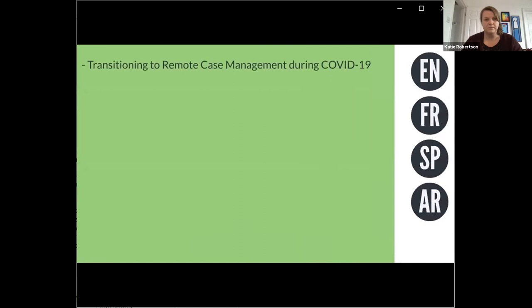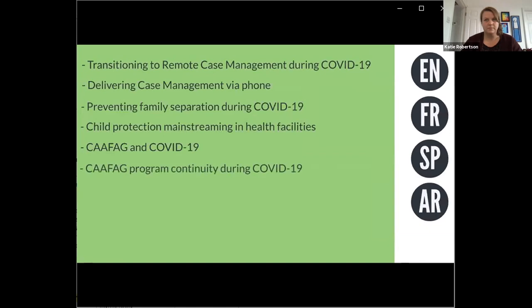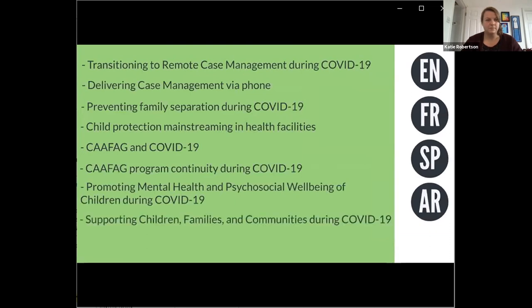The eight modules include: Transitioning to remote case management during COVID-19; Delivering case management via phone; Preventing family separation during COVID-19; Child protection mainstreaming in health facilities; CAFAG and COVID-19; CAFAG programme continuity during COVID-19; Promoting mental health and psychosocial wellbeing of children during COVID-19; Supporting children, families and communities during COVID-19. Plus a module on delivering training remotely to support the rollout of these modules where face-to-face training is not possible.